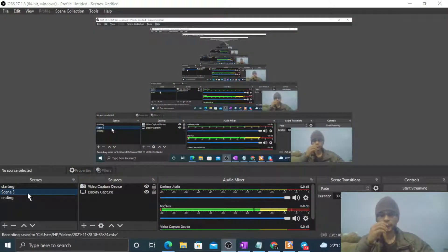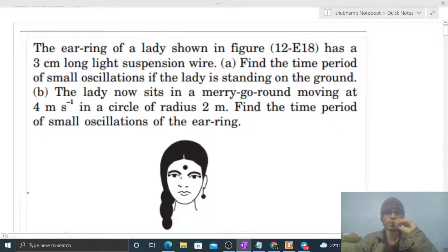Okay, hi everyone. Today let's discuss this interesting problem. It says the earring of a lady shown in figure has a 3 centimeter long light suspension wire. Find the time period of small oscillations if the lady is standing on the ground.